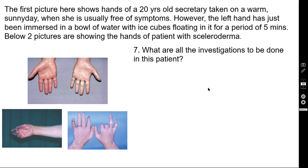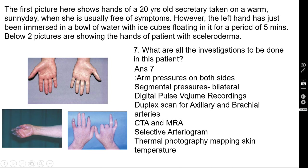Question seven: what are all the investigations to be done in this patient? The correct answer is: arm pressures on both sides, segmental pressures on both sides bilaterally, digital pulse volume recordings, duplex scan for axillary and brachial arteries, CT angiogram or MR angiogram, selective arteriogram, thermal photography, and mapping the skin temperature.